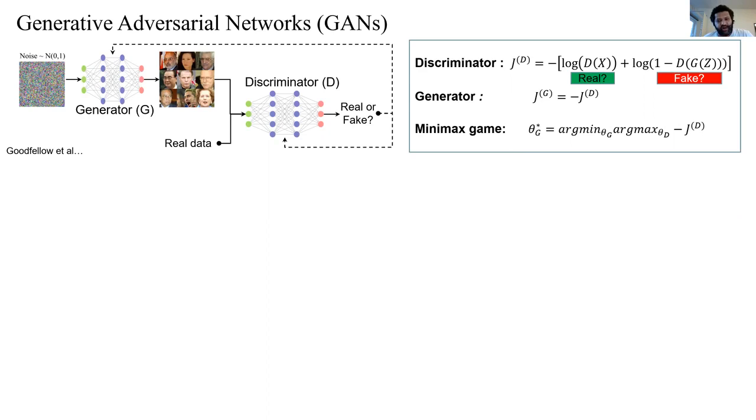Based on the discriminator output, both networks are updated in adversarial way, meaning that the discriminator aims to minimize an objective and the generator aims to maximize the same objective. Through training, the generator will be able to learn to produce good enough samples to fool the discriminator.